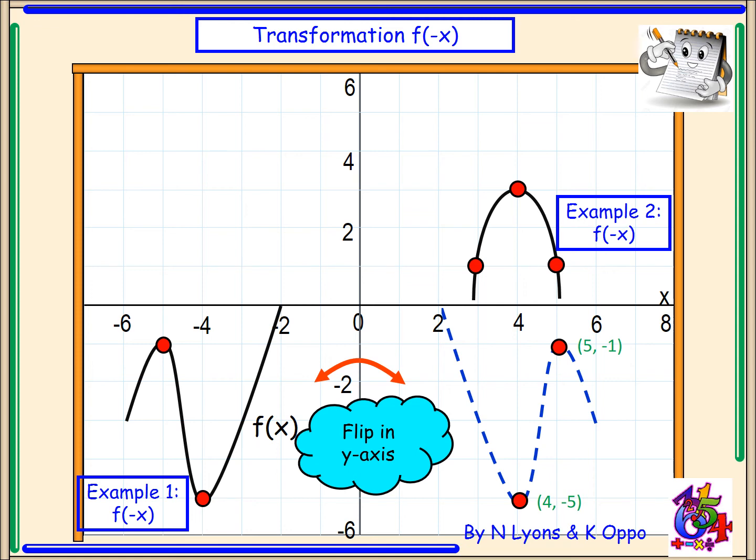This doesn't change the nature of our turning point if we flip in the y-axis. And the mapping we take our points and we multiply x by negative 1. So we're going to do the same thing for example 2.